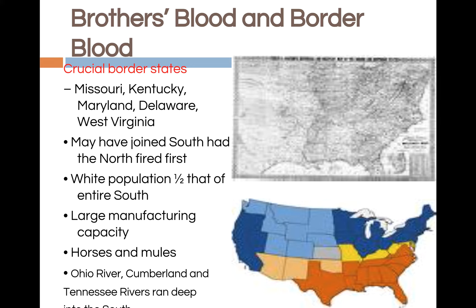The five civilized tribes of Native Americans — which included the Cherokee, Creek, Choctaw, Chickasaw, and Seminole — all sided with the Confederacy. These tribes were allowed to send delegates to the Confederate Congress. On the other side, most of the Plains Indians sided with the Union.